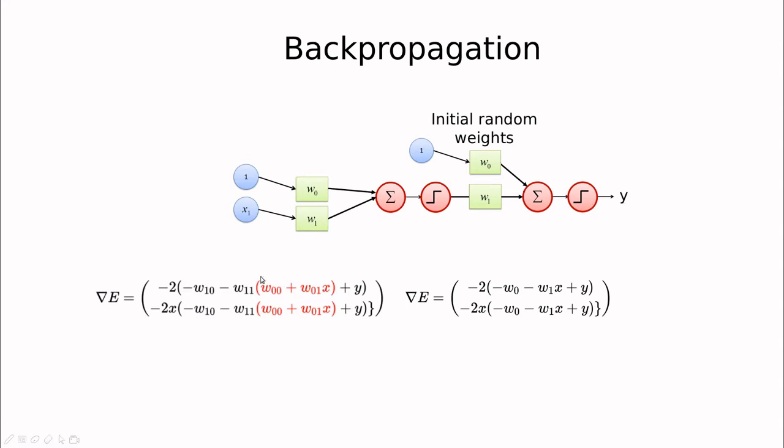Actually, the output is something like this. It's the first bias, and the second weight, sorry, the first weight, and the second weight, multiplied by what is coming from the previous layer. So this thing in red is the output of the first layer.